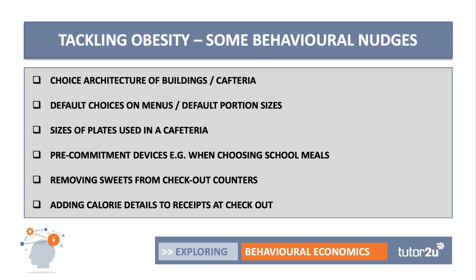Another approach in food and drink labeling is to tell you how many hours of exercise you'd have to do to burn off the calories if you consume a bottle of fizzy drink or a doughnut.